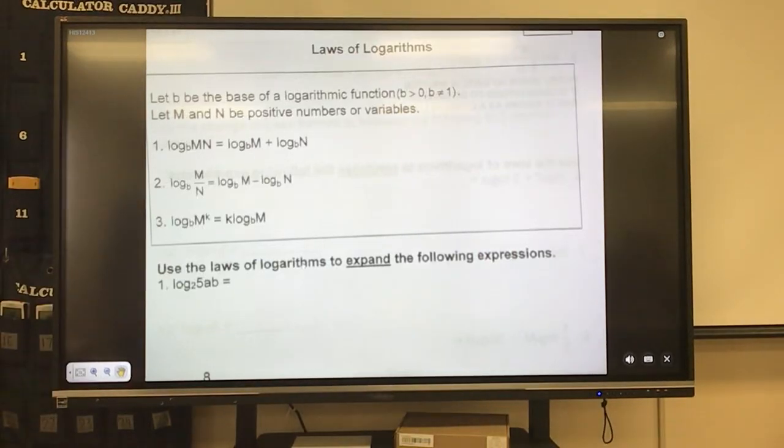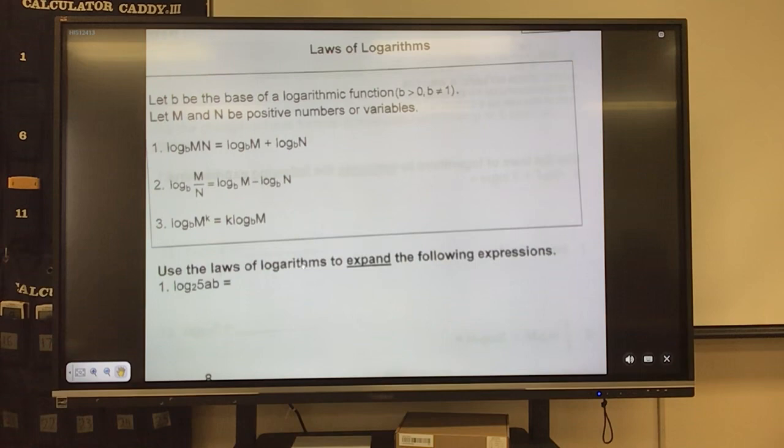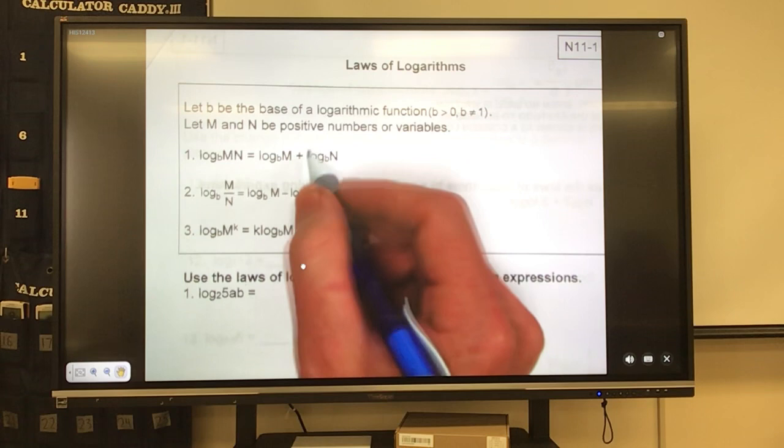This is Notes 11-1, Laws of Logarithms. Super easy stuff. As stated, when we have two variables touching, we know that means multiplication. So to undo or expand multiplication, we turn it into addition as two separate logs. So this would be log base b of M plus log base b of N. Now the opposite would be division. Well, the opposite of addition is subtraction. So to undo a fraction, you do subtraction.